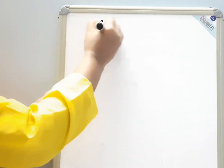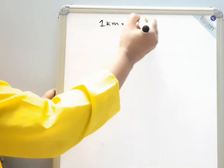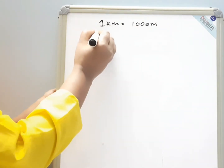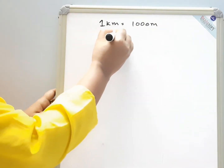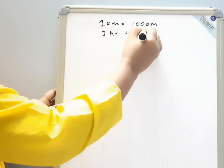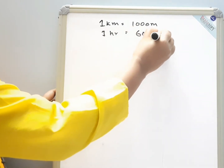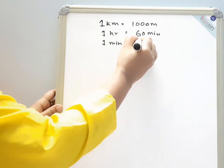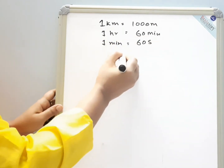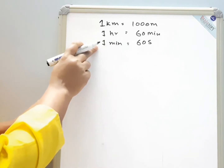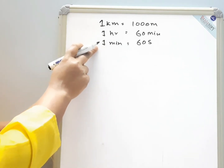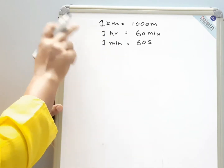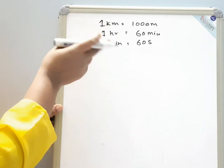1 kilometer is equal to 1000 meters. 1 hour is equal to 60 minutes. 1 minute is equal to 60 seconds. We are going to use this information to change kilometers into meters, and hours into minutes, and minutes into seconds.